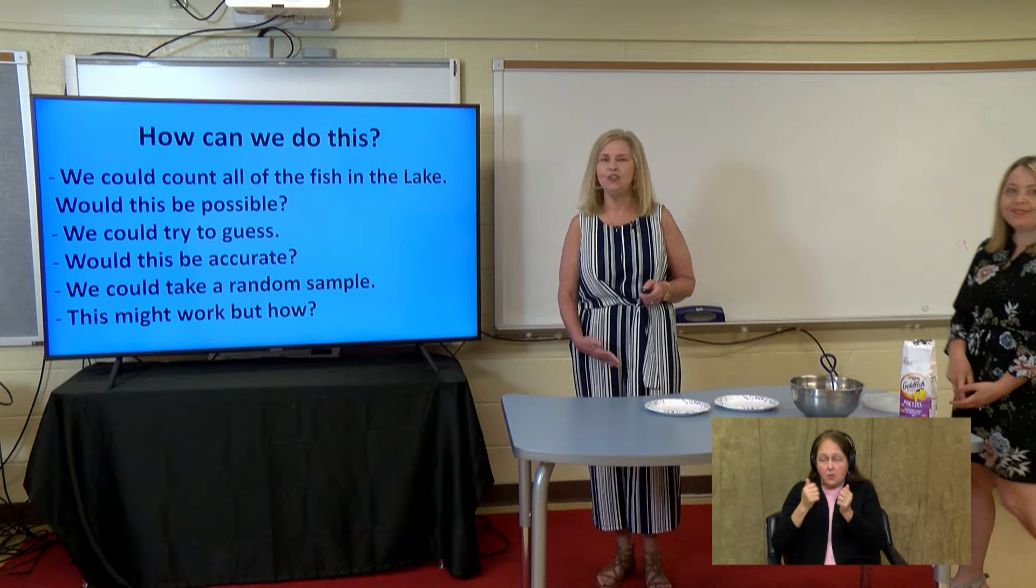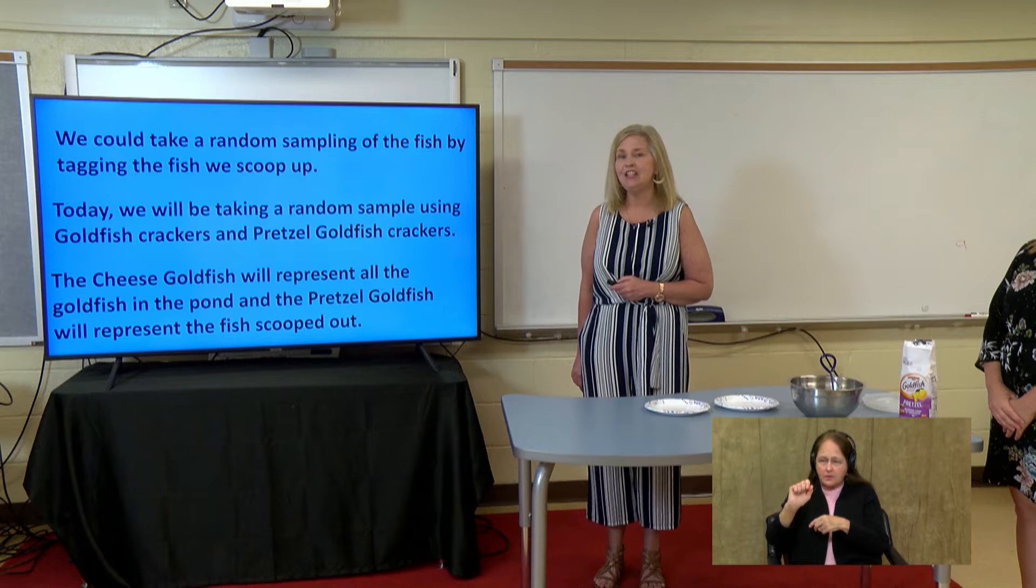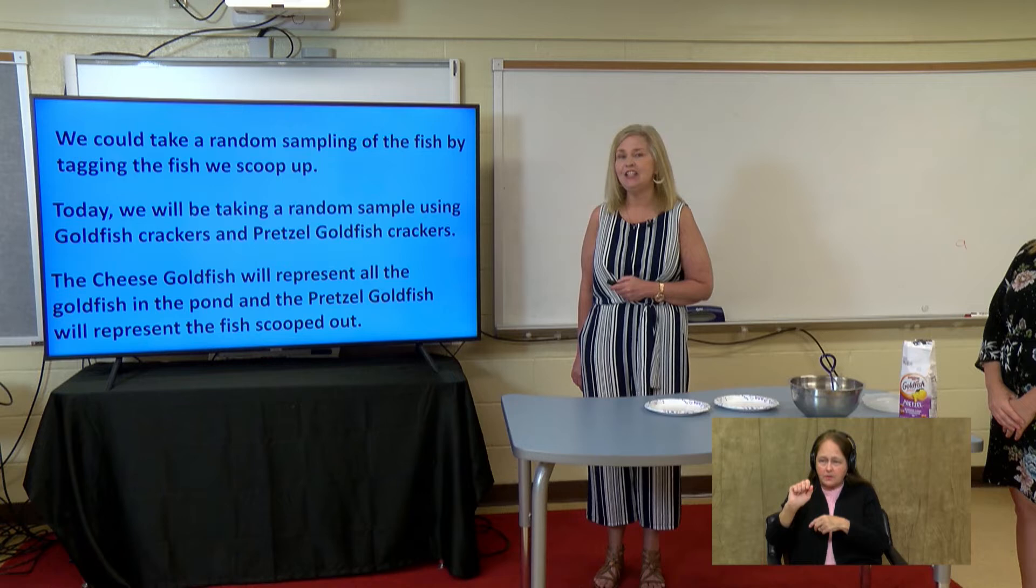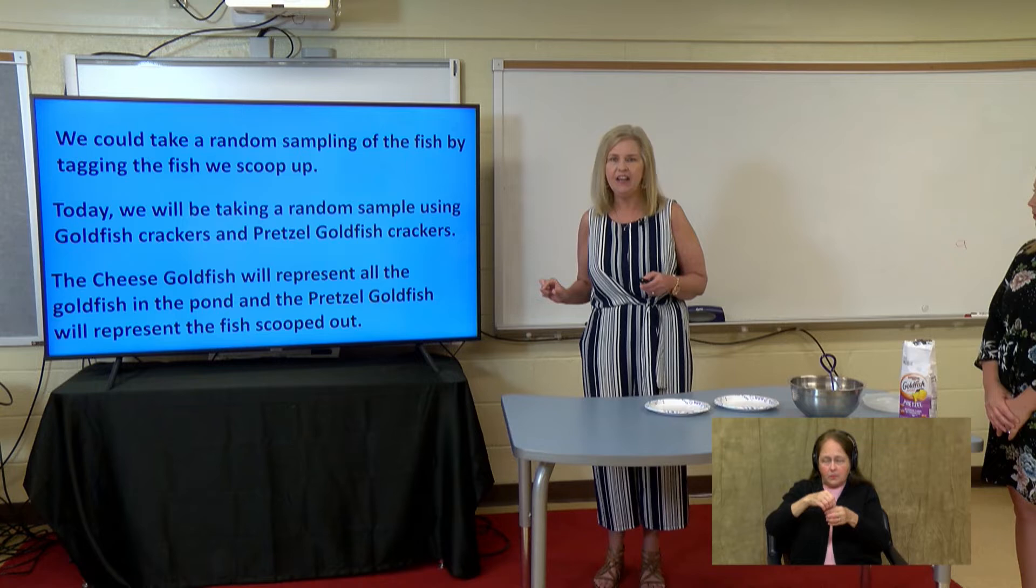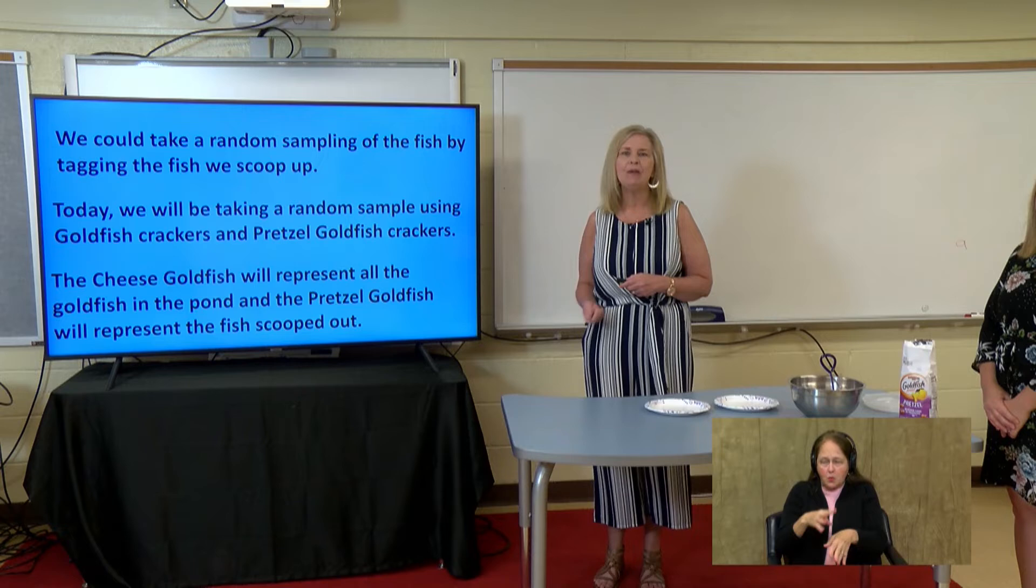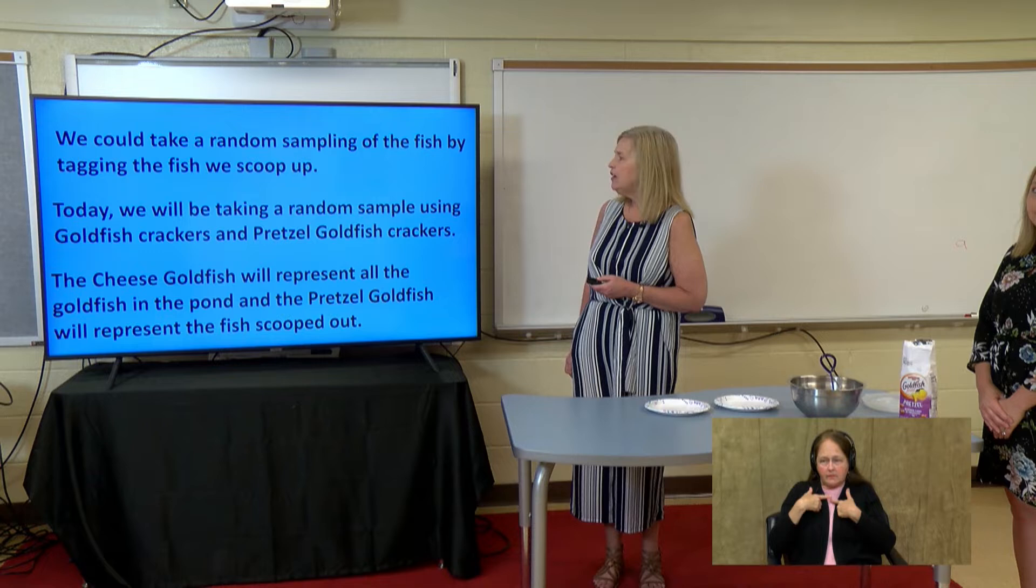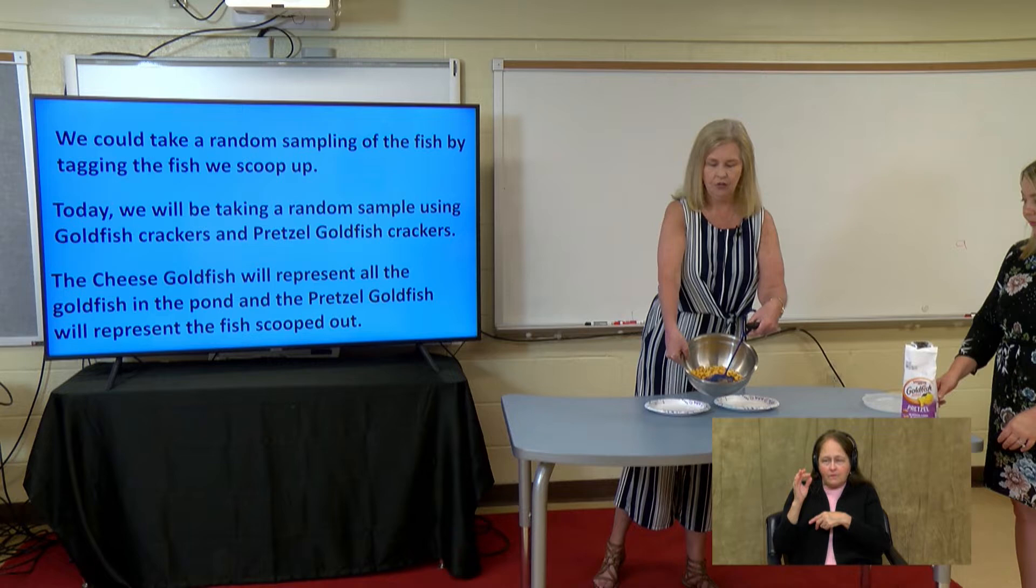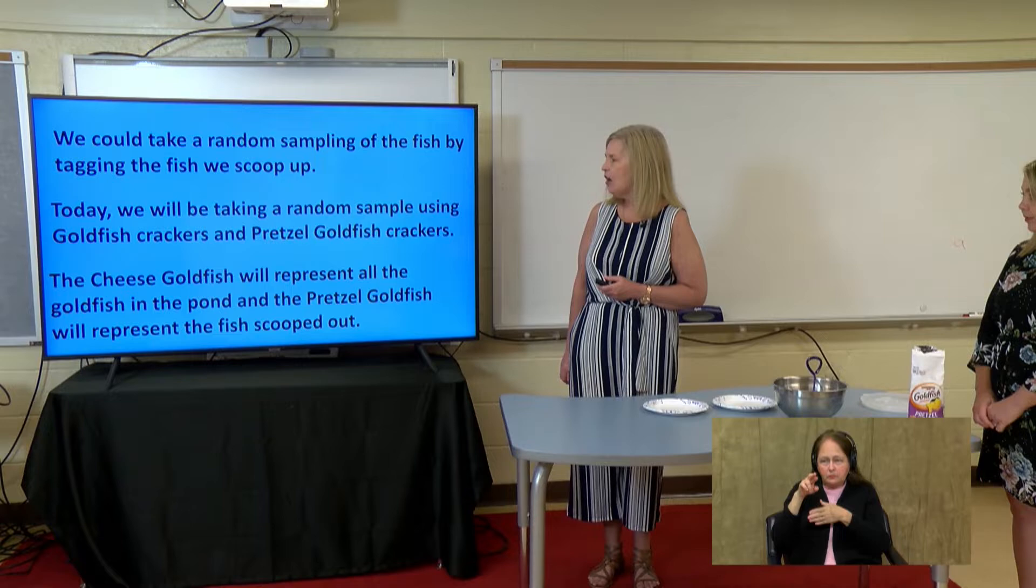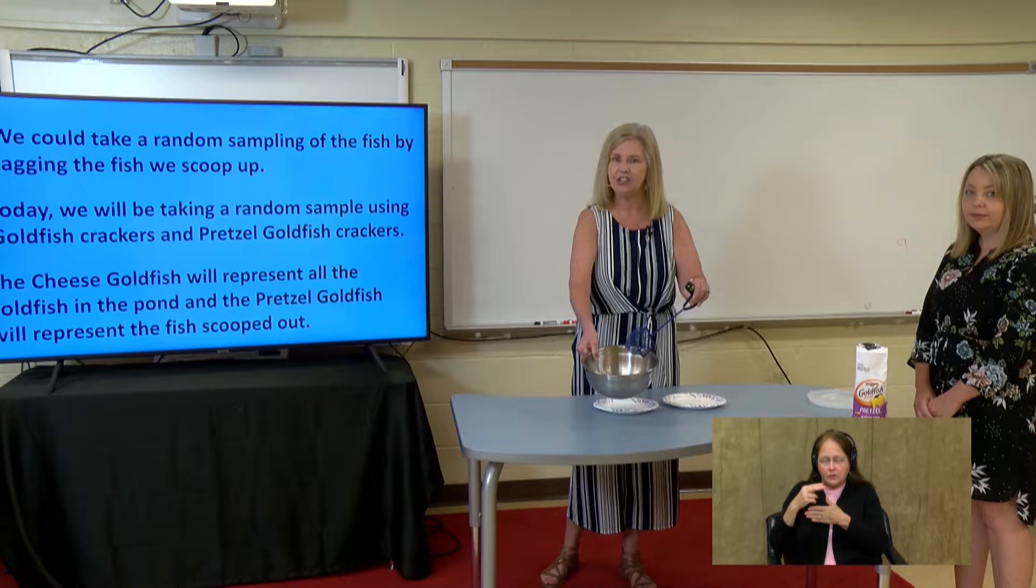Today I have Ms. Phillips with me to help me with this lesson, and she's going to do the activity with us. We could take what's called a random sampling of the fish by what's called tagging the fish we scoop up. Now some of you may be aware of this word. Tagging means we're going to catch, scoop up fish in a net, and we're going to put markers on them, tags on them, so that when we put them back in the water, we can see if we pull them out again. A lot of scientists use tagging to find out about our environment and ocean life. We're going to be using goldfish crackers, the cheese goldfish crackers, and we're going to be using pretzel goldfish crackers. The cheese goldfish will represent all of the fish in the lake. These are all of the fish that are in the lake. And the pretzel goldfish will represent what we scoop out as our random sampling.